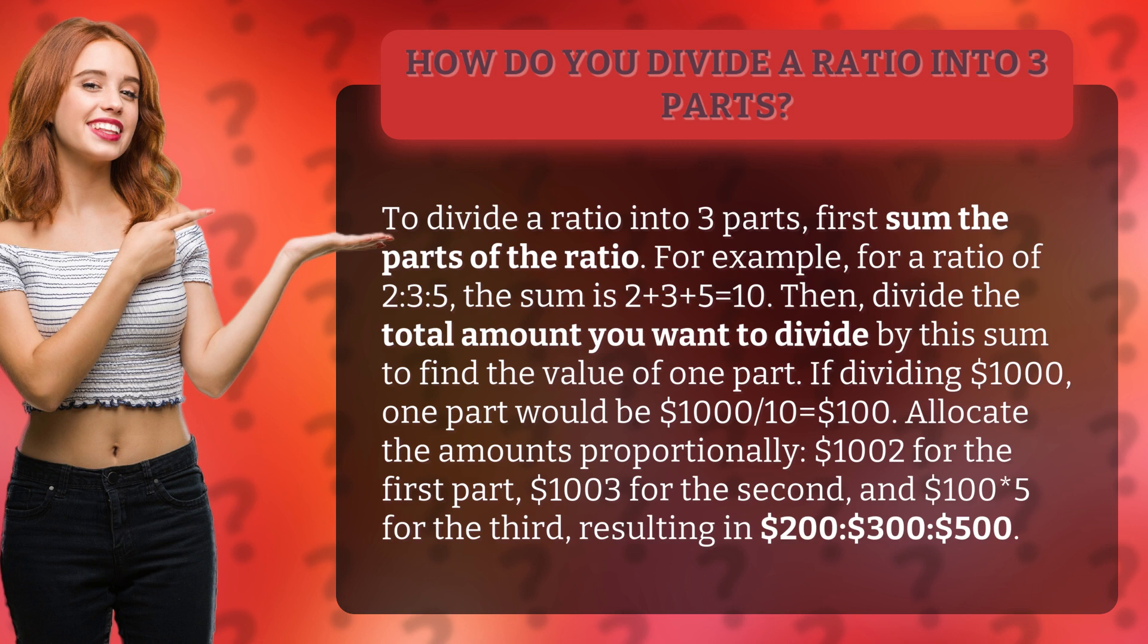Allocate the amounts proportionally: $100×2 for the first part, $100×3 for the second, and $100×5 for the third, resulting in $200, $300, $500.